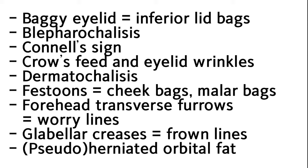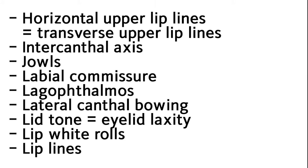Herniated orbital fat, also known as pseudo-herniated orbital fat, is the anterior displacement of fat located under the orbital septum. It should be examined with the patient in the upright sitting or standing position. The orbital fat pads are classically divided into two upper compartments — medial and central — and three lower compartments — medial, central, and lateral. Horizontal upper lip lines, also known as transverse upper lip lines, are one or two horizontal lines located centrally over the filtrum of the upper lip. The intercanthal axis is the imaginary line connecting the medial and lateral canthi. The jowl is a visible accumulation of subcutaneous fat along and inferior to the mandibular border, with its anterior limits — the pre-jowl depression — defined by the mandibular retaining ligaments.